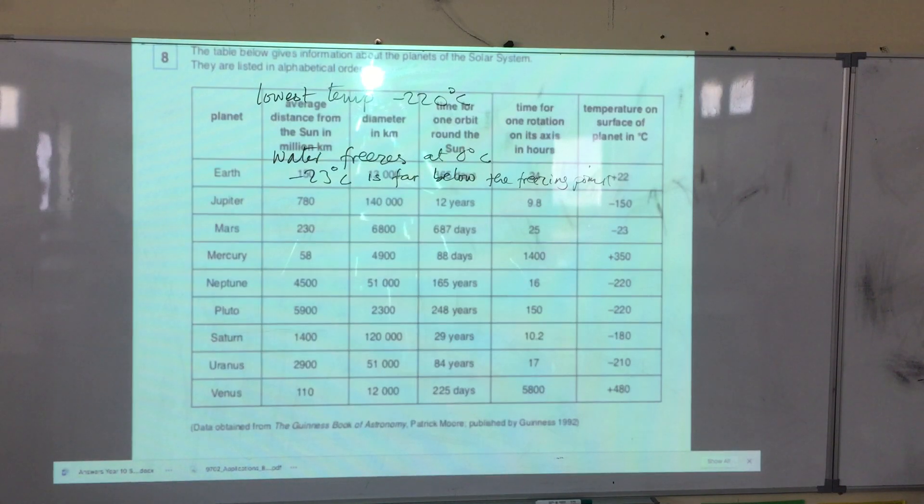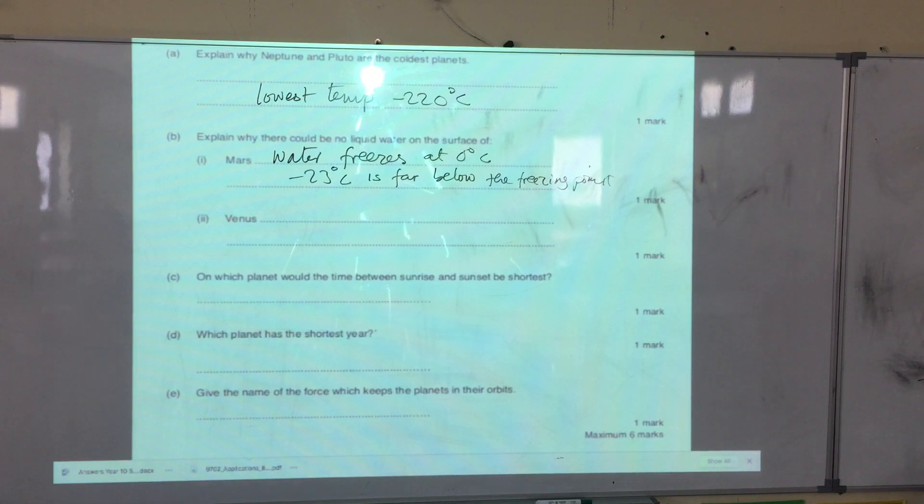What about Venus? Let's go back to the data. Venus - the temperature there is plus 480 degrees.